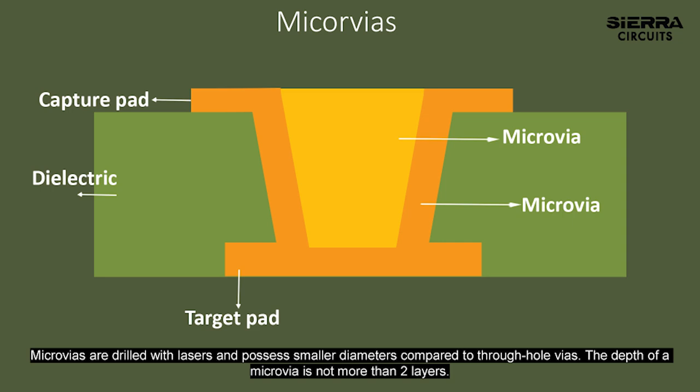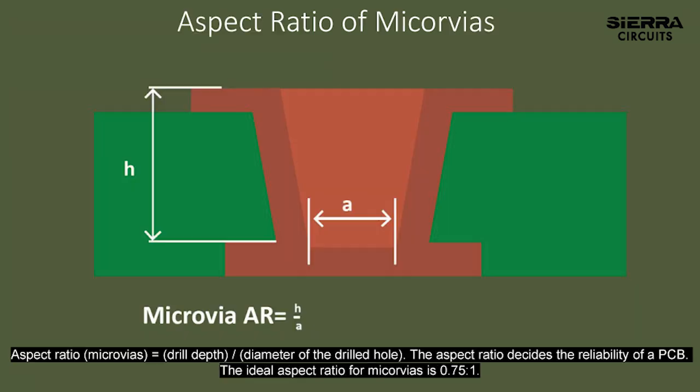Microvias are drilled with lasers and possess smaller diameters compared to through hole vias. The depth of a microvia is not more than two layers. The aspect ratio for microvias equals drill depth divided by the diameter of the drilled hole. The aspect ratio decides the reliability of a PCB, and the ideal aspect ratio for microvias is 0.75:1.